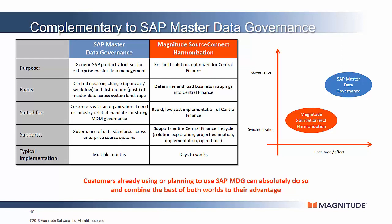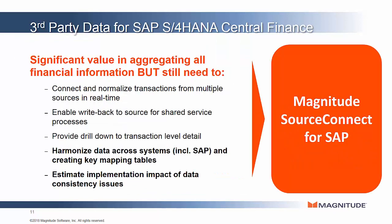If MDG is already implemented, the golden records and lineage output from SourceConnect Harmonization can be fed into MDG as an accelerator as well. This is helpful on an ongoing basis — for example, when a new ERP is acquired. SourceConnect Harmonization brings tremendous value in the integration of master data across all systems, even SAP, into Central Finance, and it can be used up front to help with master data scoping exercises.